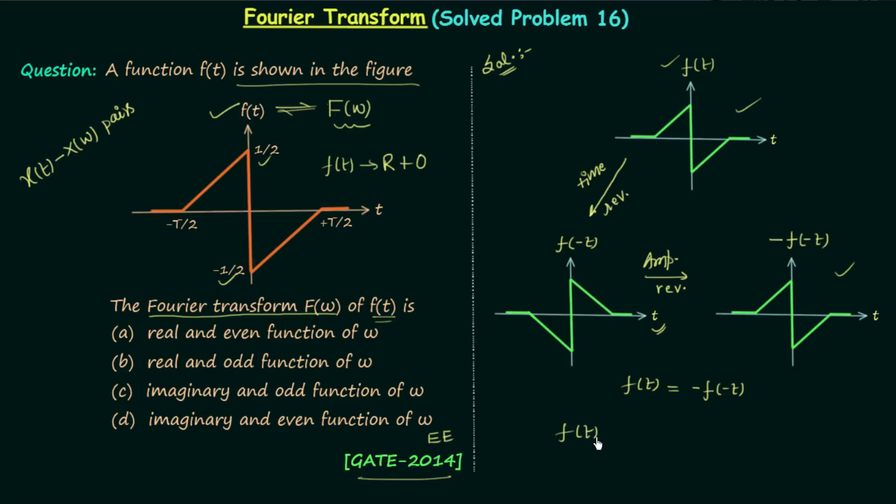f(t) is a real valued signal and it is odd in nature. We know when this happens the corresponding Fourier transform is imaginary and odd. So option C is the correct option.